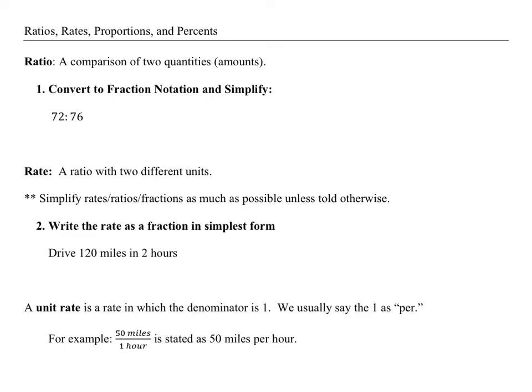A ratio is a comparison of two quantities or amounts. So basically a ratio is a fraction. For number one here we can write it as fraction notation 72 over 76, and let's simplify this. I'm going to divide each of them by 4. 72 divided by 4 is 18, and 76 divided by 4 is 19. So 18 over 19 is the simplified fraction.